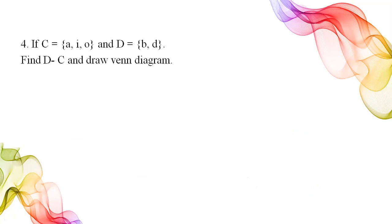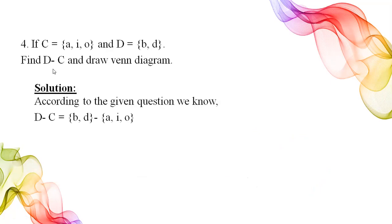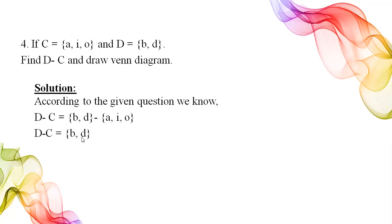We take one more example to clarify our concept: finding D minus C. We write down set D and then set C. Since these two sets are disjoint, the answer is b and d — we write the elements of D that are not in C.